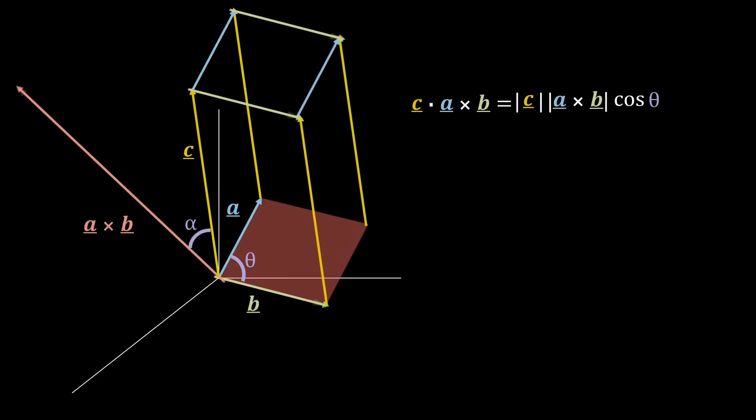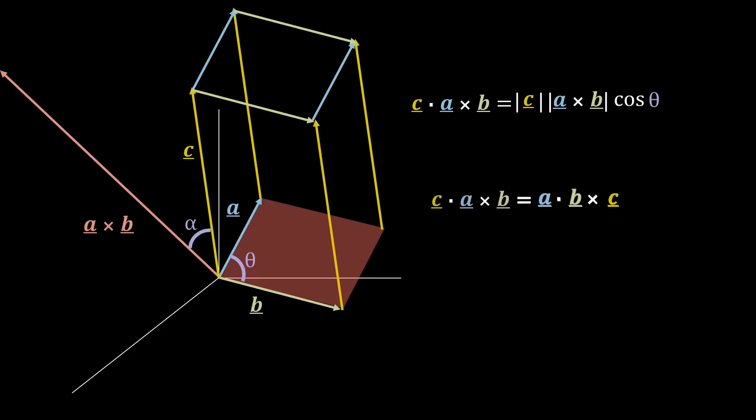And clearly, as we see here, if we increase the magnitude of b, then everything grows, and obviously the value of the volume will grow. Clearly, we could come to the same conclusion for volume with a dot product of a and b cross c, or the dot product with b and c cross a.